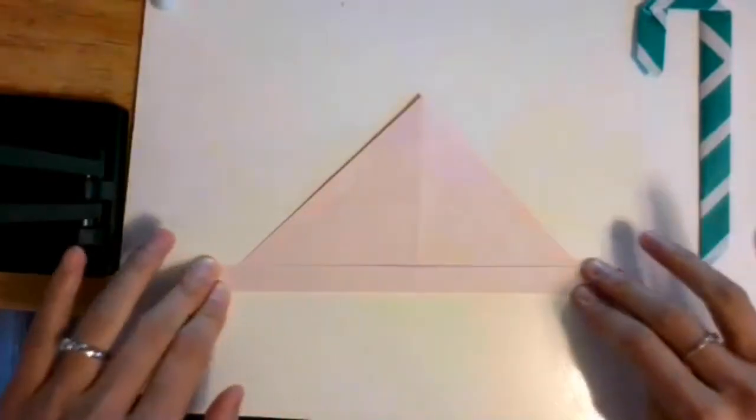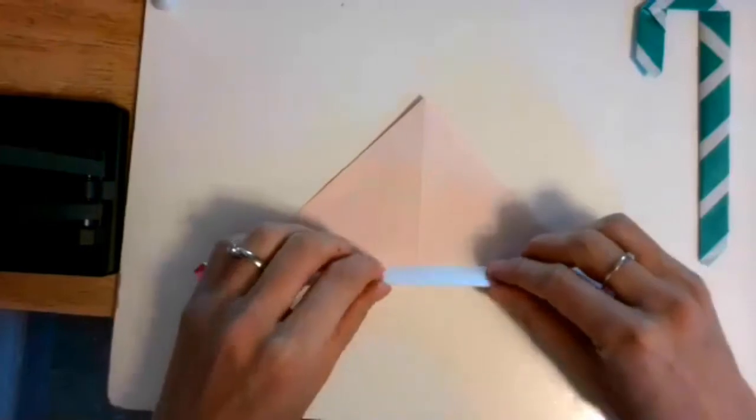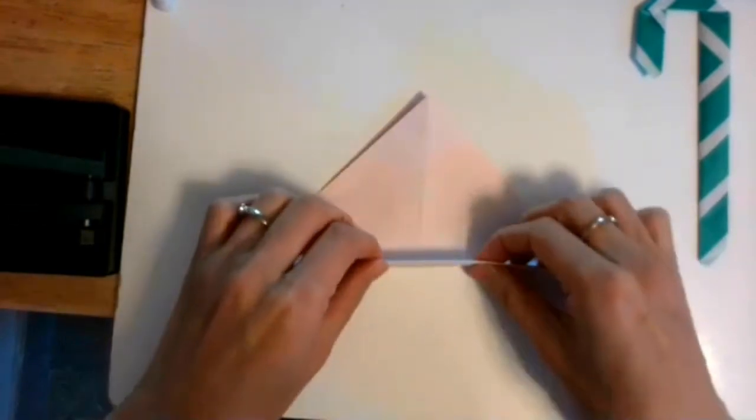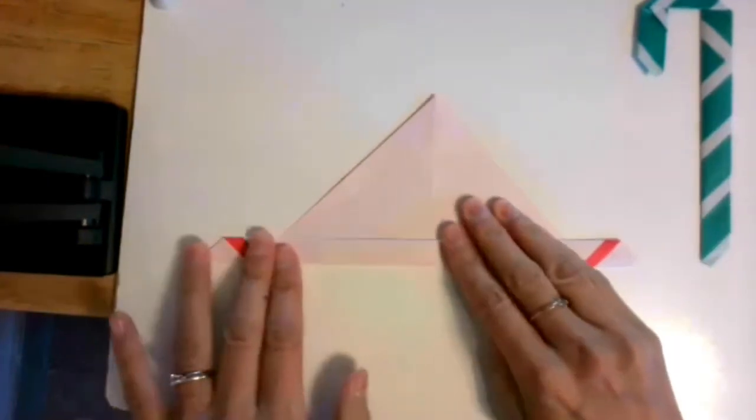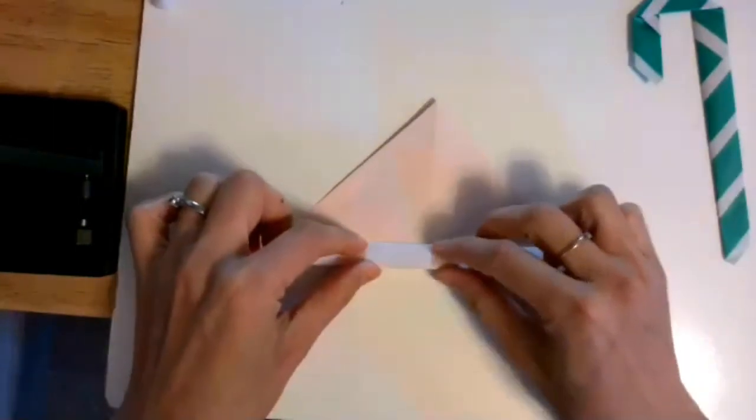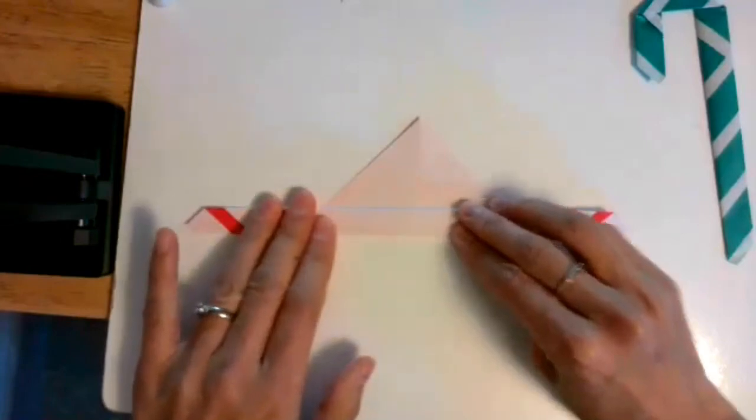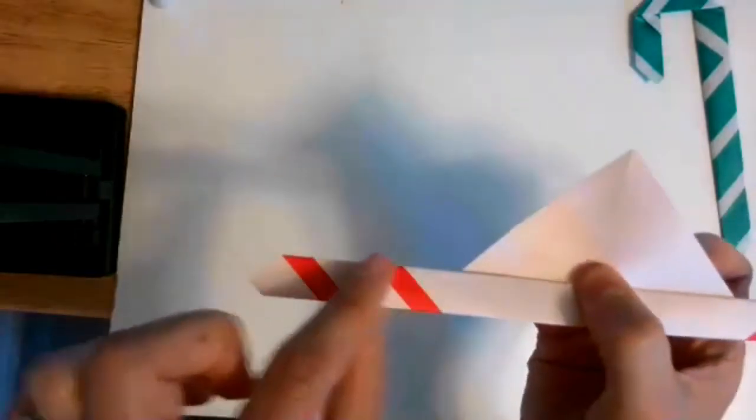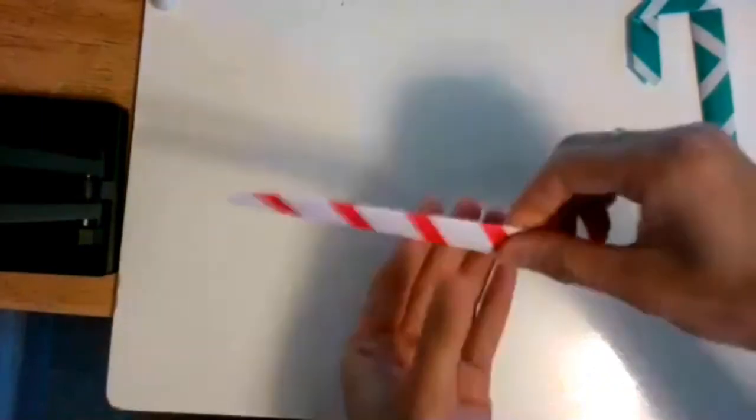Now we're going to crease right here, then keep rolling this up. Crease right here next, then roll it up and up and up. Keep it nice and tight. You don't want the candy cane to be thicker than when you started. Roll all the way to the top.